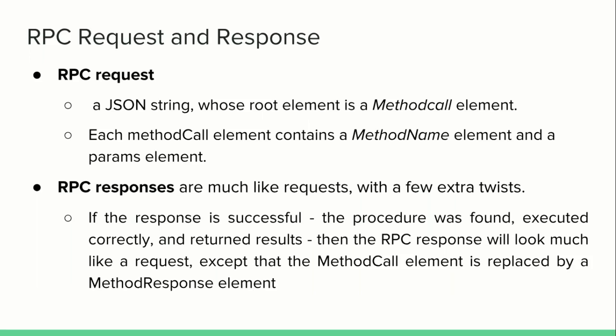An RPC request is basically a JSON string whose root element is a method call element. Each method call element contains a method name element and a params element. The method name element identifies the name of the method to be called, while the params element contains a list of parameters and their values. If the response is successful — meaning the procedure was found, executed correctly, and returned results — then the RPC response will look much like a request, except that the method call element is replaced by a method response element and there is no method name element.